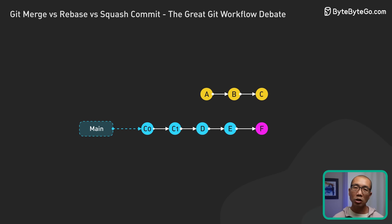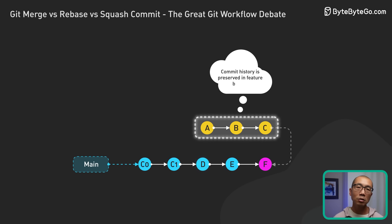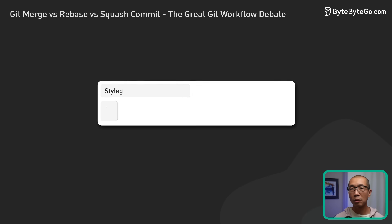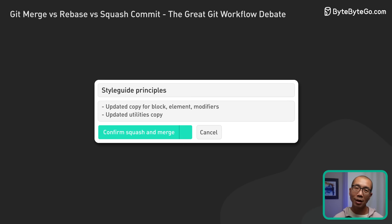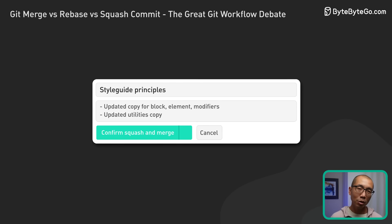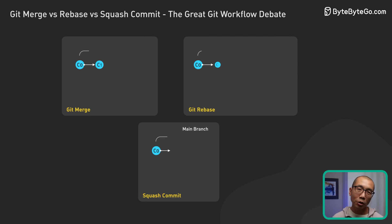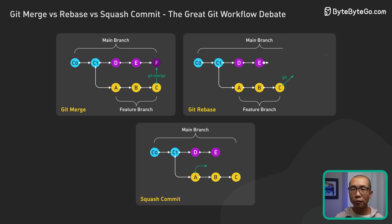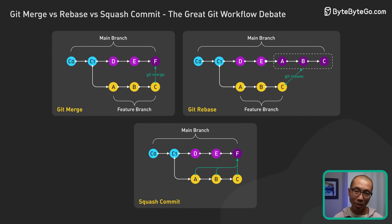That said, squashing commits is a popular strategy on platforms like GitHub because it allows us to tidy up history in the main branch while still preserving the detailed commit history in the feature branch — it's kind of like a hybrid approach. Before we wrap up, I would love to know: have you used these strategies before? Which one do you prefer and why? Let's have a discussion in the comments below.